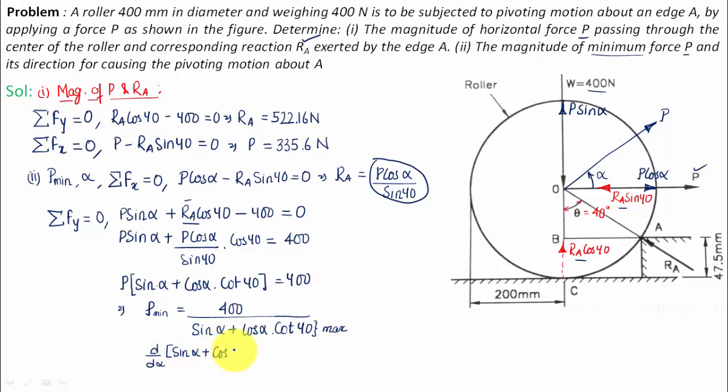Differentiating the denominator sin alpha plus cos alpha cot 40 and setting it equal to zero. This is the concept that we learn in 12th grade in maximum minimum in differential calculus. So d by d alpha of sin alpha will be cos alpha, and d by d alpha of cos alpha will be negative sin alpha, negative sin alpha cot 40 is equal to zero. So this can also be written as cos alpha is equal to sin alpha cot 40.